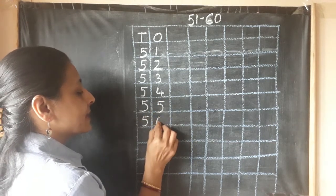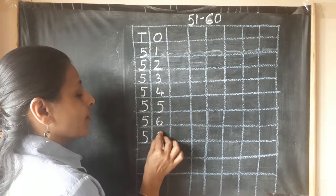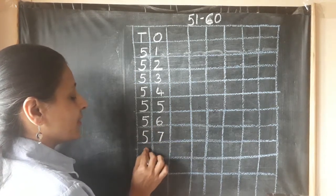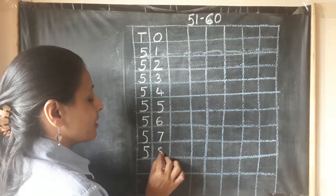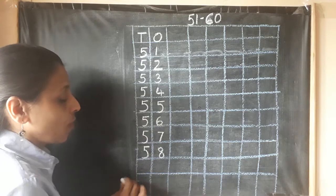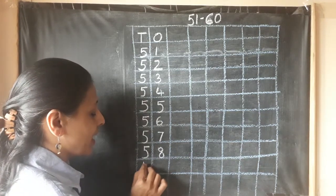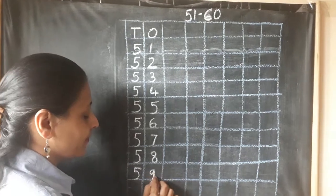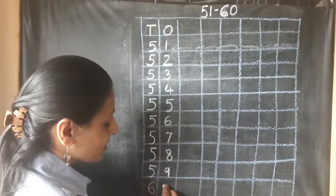Continuing the sequence: 5, 6, 56. 5, 7, 57. 5, 8, 58. What comes after 5, 8, 58? Yes, 5, 9, 59 and 6, 0, 60.